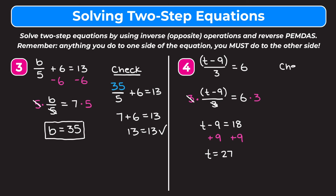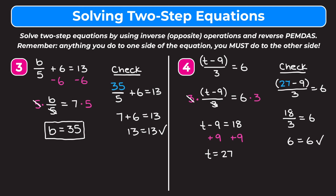We check our work by plugging in 27 for t: 27 minus 9 over 3 equals 6. We do what's in the parentheses first: 27 minus 9 is 18. So 18 over 3 equals 6. 18 divided by 3 is 6, so 6 equals 6 — a true statement. So t equals 27 is correct.